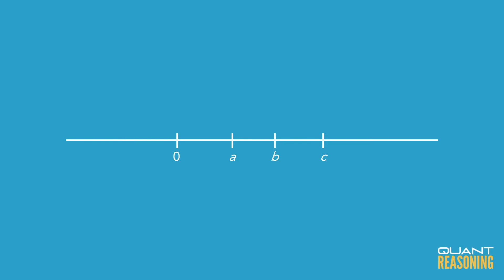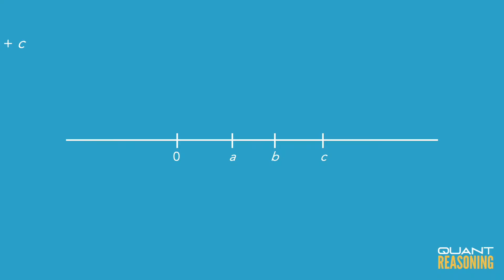Now they're asking which of the following Roman numerals must be true. So as I go one by one, let's see what we come up with. With the first one, they're suggesting that 2A would be further to the right of 0 than B plus C.